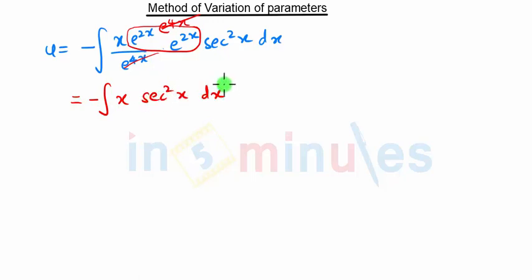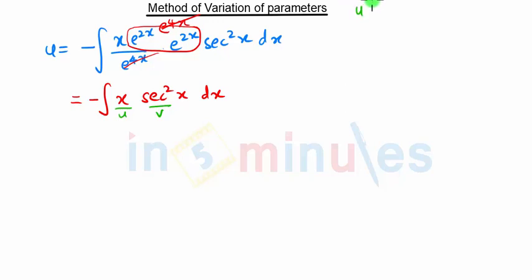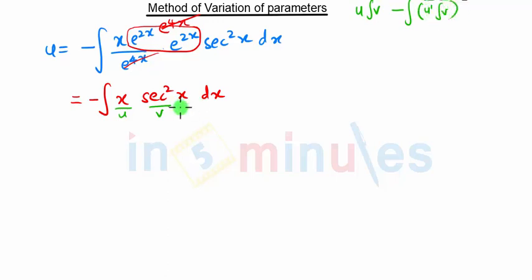Here we are going to apply the u·v rule of integration. The u·v rule of integration states: u times the integration of v, minus the integration of the derivative of u times the integration of v.